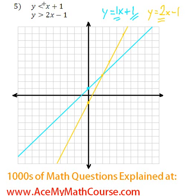Okay, but we're interested in y is smaller than x plus 1 and y is greater than 2x minus 1. So our solution area will be below the blue line, right? Because y is smaller than the line.